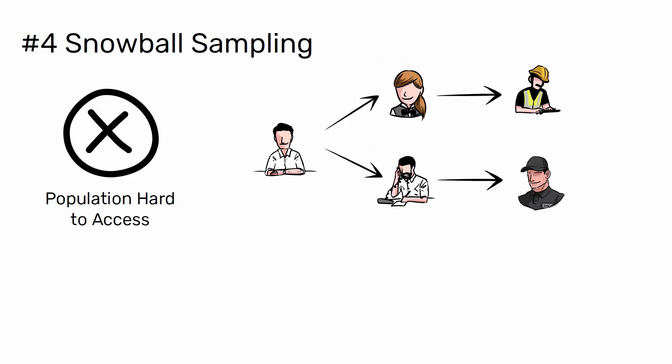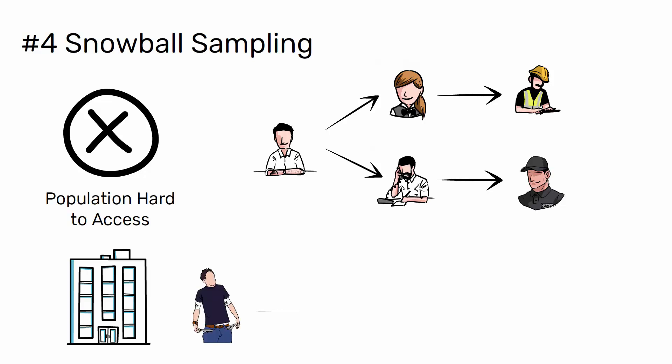You are researching experiences of homelessness in your city. Since there is no list of all homeless people in the city, probability sampling is impossible. You meet one person who agrees to participate in the research, and she puts you in contact with other homeless people that she knows in the area.